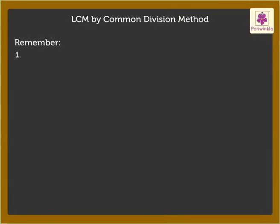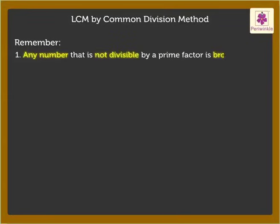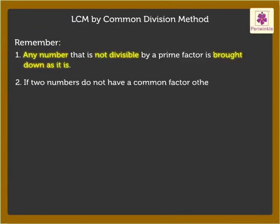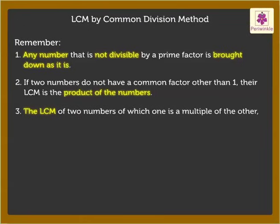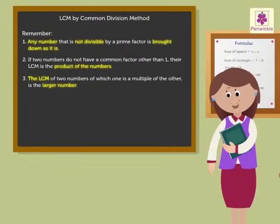Remember: 1. Any number that is not divisible by a prime factor is brought down as it is. 2. If two numbers do not have a common factor other than 1, their L.C.M. is the product of the numbers. 3. The L.C.M. of two numbers, of which one is a multiple of the other, is the larger number. Now try some examples and find the L.C.M. by the Common Division Method on your own.